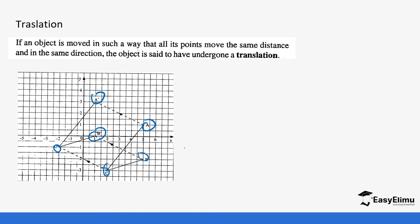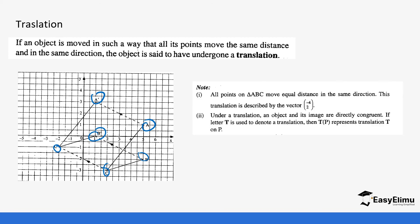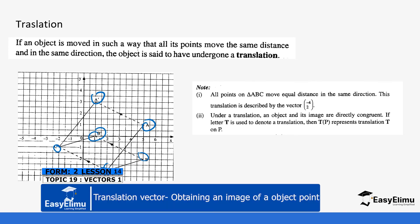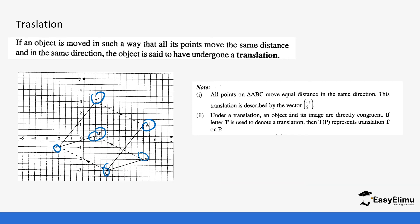So we say that image A, B, C has been translated to A prime, B prime, C prime. We usually describe this with a vector — in this case, the image A, B, C has been moved in the same direction and distance, described by a vector negative 4 and 2, as you can see from the image. We call negative 4 and 2 the translation vector.